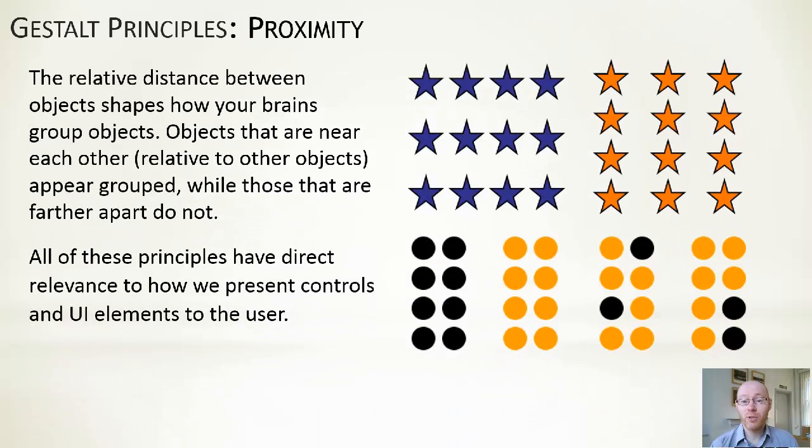So start off the first one, which is the notion of proximity. And if you look at the different colored shapes over on the right hand side of the screen, it's probable that when you're looking at this you see three rows of purple stars and you see three columns of orange stars. And the only difference between them is in terms of their spacing. And the relative spacing between them provides a cue to our brain.